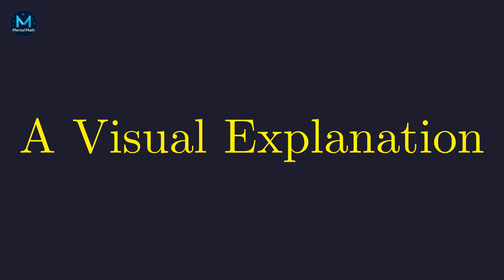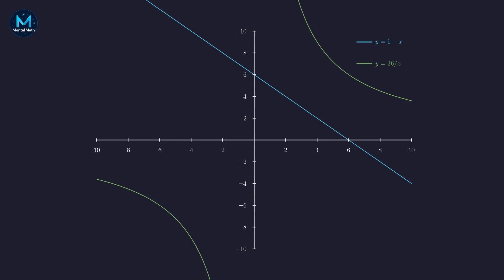Let's visualize why there are no real solutions. A graph makes this beautifully clear. Let's plot both equations on the coordinate plane. Any solutions would be where the graphs intersect. The equation x plus y equals 6 is this straight line. And x times y equals 36 gives us this hyperbola.